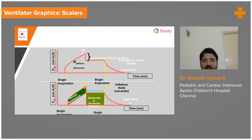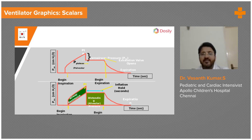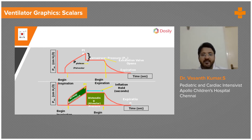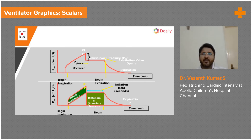This is a pressure-time scalar in volume control mode. As air flows in, you get a peak pressure. Once peak pressure is reached, air has entered the alveoli. The peak pressure is the sum of pressure needed to travel through the airway and reach the alveoli. A pause is applied during inspiration so all the air gets distributed into the alveoli and there is a pressure drop — this is called plateau pressure. Peak pressure determines the total pressure for both airway resistance and alveoli; plateau pressure tells you the pressure in the alveoli, indicating lung compliance.